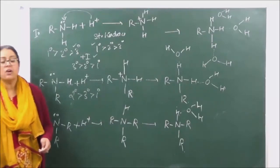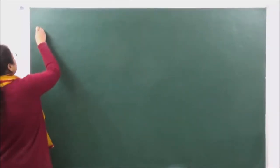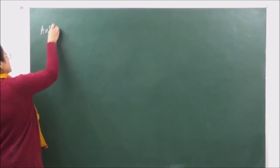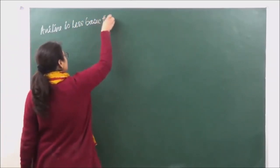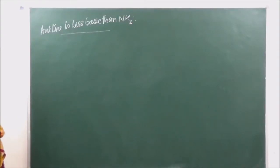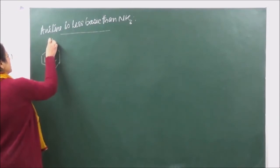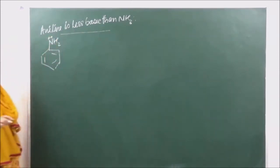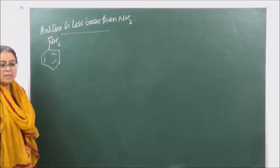Let's go on to the comparative study of basic strength of aromatic amines and aliphatic amines. You should remember that aniline is less basic than ammonia, or even less basic than aliphatic amines. The reason behind this is that in aniline, the lone pair of electrons on nitrogen is in conjugation with the benzene ring, so the lone pair is not easily available for donation. Therefore, aniline behaves as a weak base.